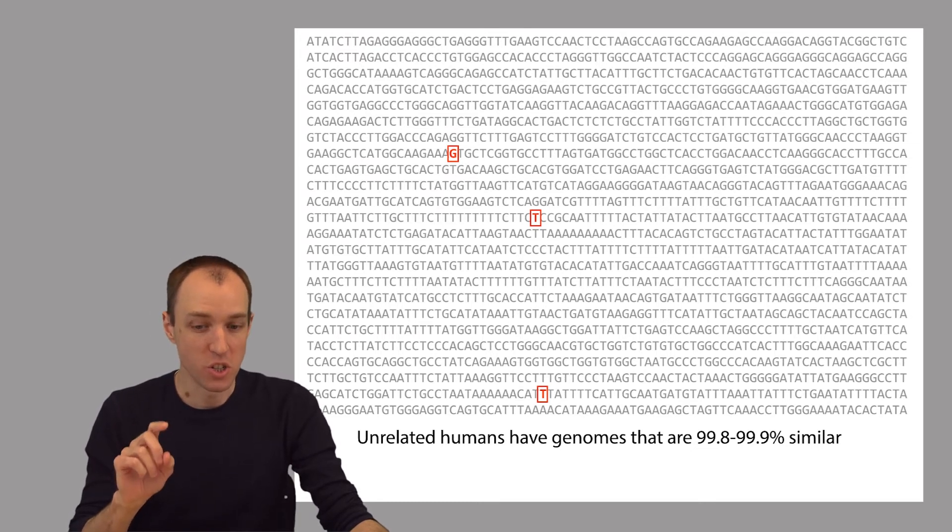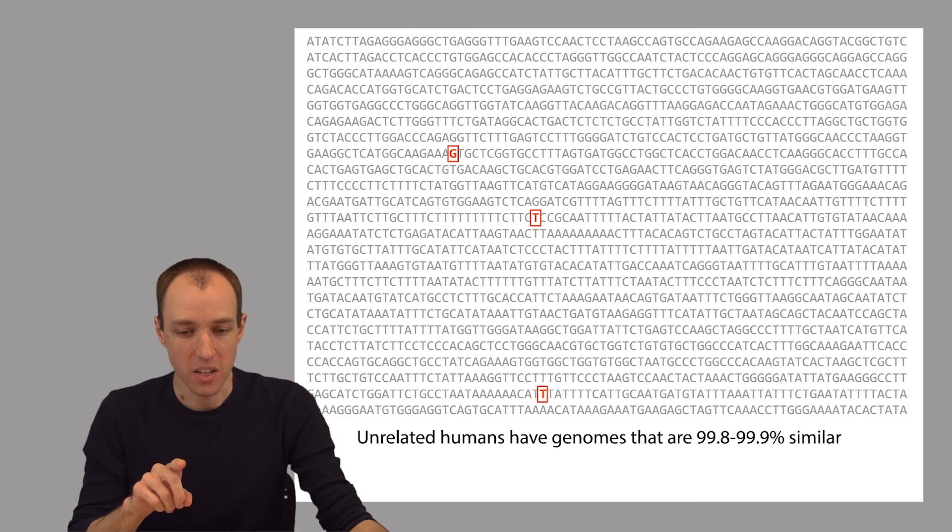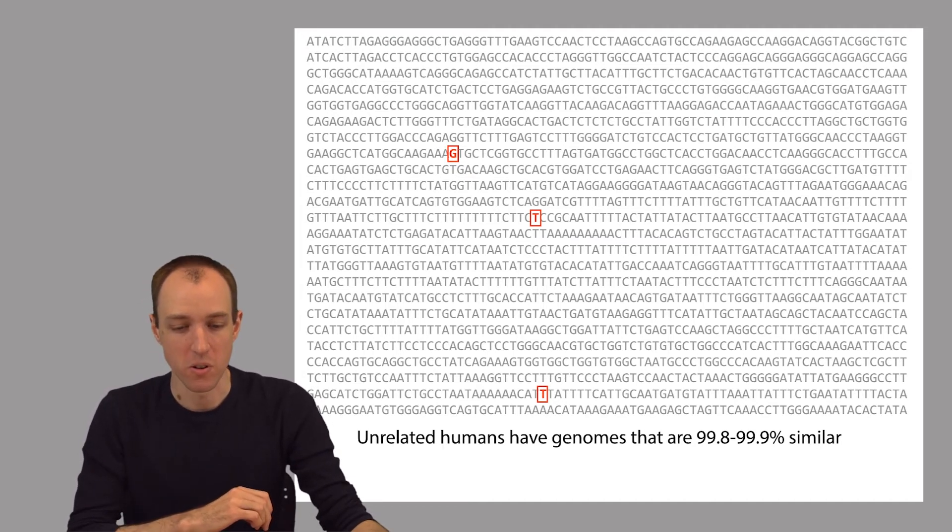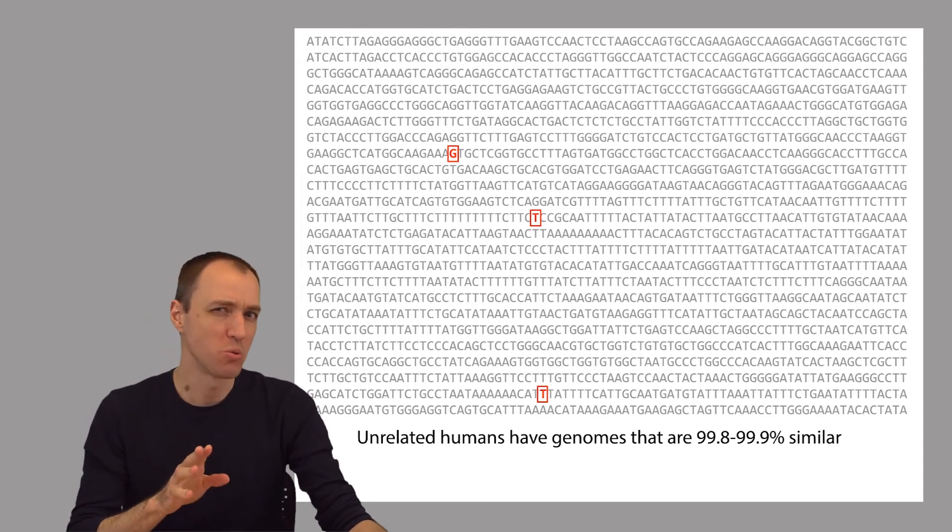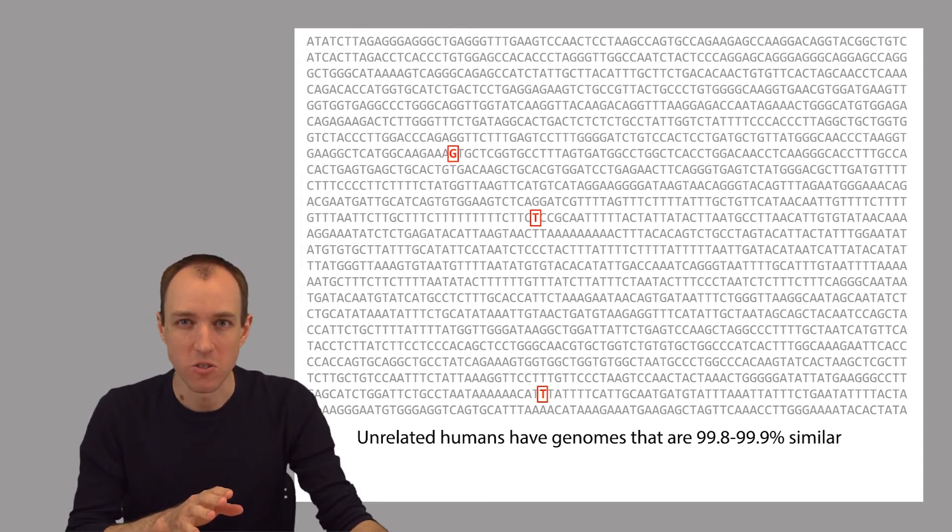An important fact about human genomes is that if you take two unrelated human beings and compare their genome sequences, they're actually very, very similar. They're about 99.8% to 99.9% similar, depending on exactly how you count. So that's only about one or two differences every 1,000 bases or so.